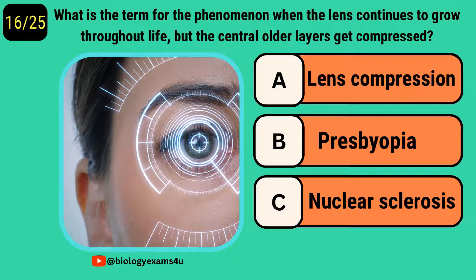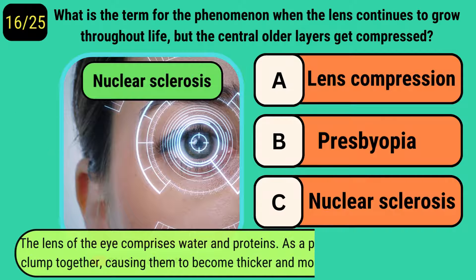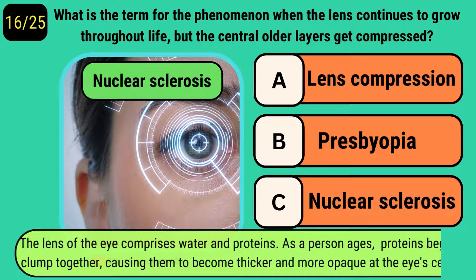What is the term for the phenomenon when the lens continues to grow throughout life but the central outer layers get compressed? It is called nuclear sclerosis. The lens of the eye comprises water and proteins. Due to aging, proteins begin to clump together causing them to become thicker and more opaque at the eye center, leading to nuclear sclerosis.